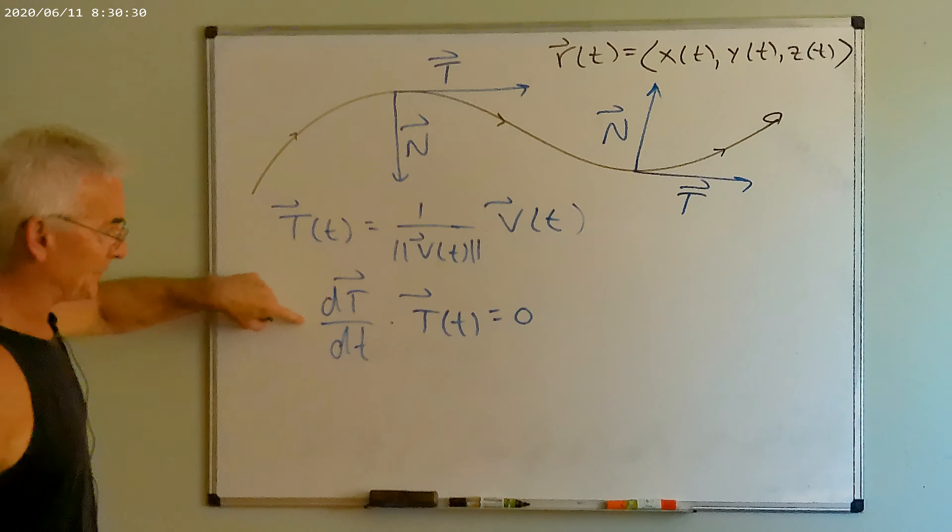In this case, the normal vector would be pointing in this direction. What we would like to do is figure out how to find these two specific vectors. We make them both into unit vectors, and then I can basically describe all of my motion as some linear combination of the two.